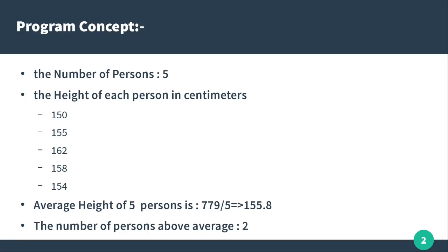What we will see is the average height of persons. For example, we will have an output. We will have a number of persons — making an assumption — and then the height of each person in cm as input. We will add all the values, for example a total of 770, and divide it by 5 to get the average height of the five persons.